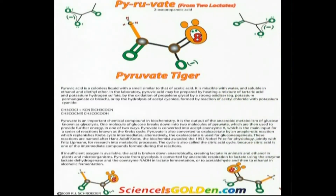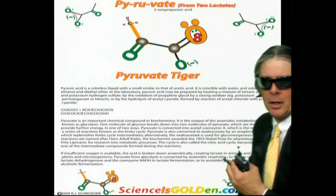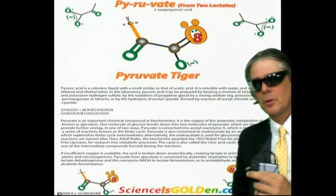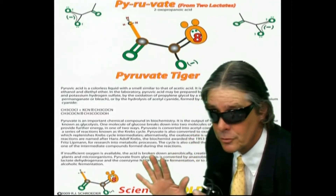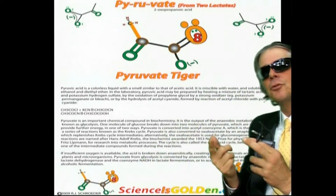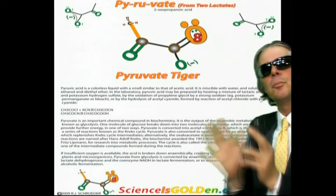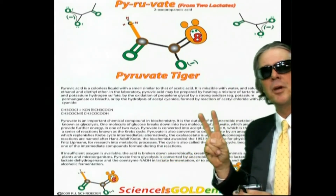What is all this we're talking about? Pyruvate. You'll hear these names when you're studying biochemistry. You'll see the glucose — glucose is six carbons, right? The first reaction that happens is it breaks it in half. Two pyruvates.